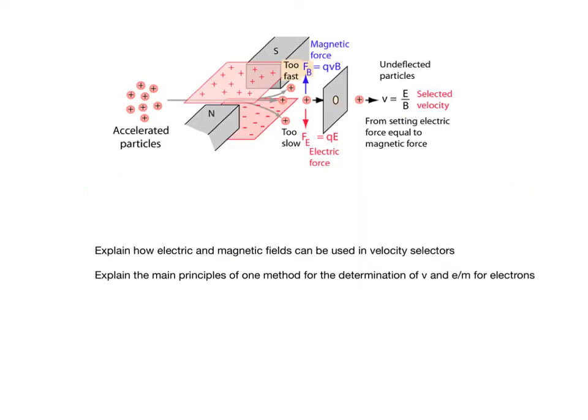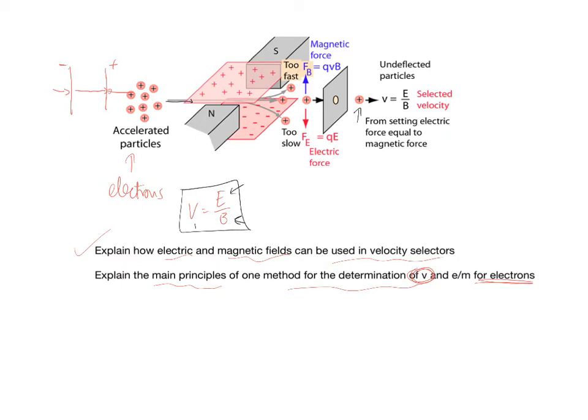You can now see the two syllabus statements this video is looking at. We've explained the first one, how electric and magnetic fields can be used in a velocity selector, which is shown in the image above. The second one asks you to explain the main principles of determining V, which is a velocity, and E over M for an electron, where E is the charge of an electron. Now, let's look at this V for an electron first. Well, that's quite easy. Just imagine that we use electrons as the accelerating particle. As we found earlier, V is equal to E over B. So what we could do is fire some electrons in. Remember, we need to accelerate them up. The way we can do that is using some charged plates. If an electron comes in here, this one is negative and this one's positive. It's going to accelerate up towards this plate, and then it can be fired out and onwards. When it enters the velocity selector, we can adjust E and B until we detect the electron. Once we do that, we can just use this equation, remembering that V here is velocity. And we can find the velocity of those electrons from a velocity selector.